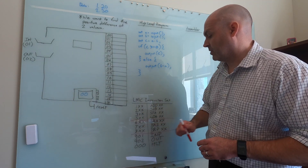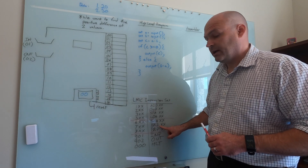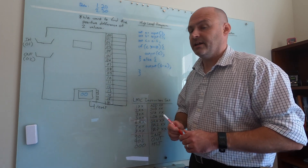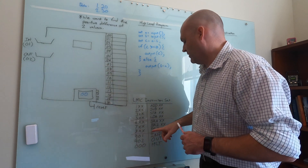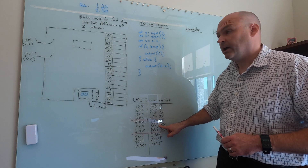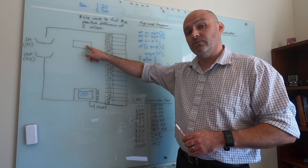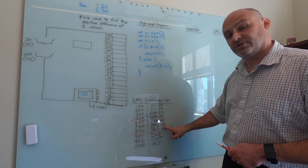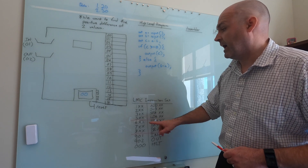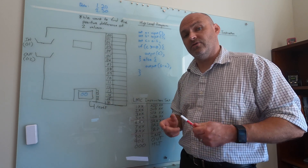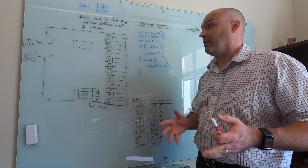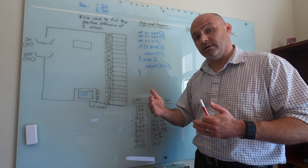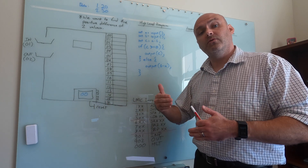The next instruction is opcode seven — branch on zero. This is like branch absolute except it's conditional, and the condition is the value inside the accumulator. When the little man reads a branch on zero instruction, he first checks the accumulator. If the value is zero, he conducts the branch, changing the program counter to match the operand. However, if the value is anything other than zero, he does nothing — he just increments the program counter by one as normal and moves on.